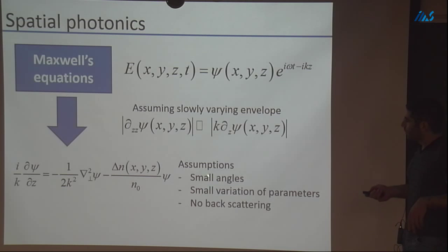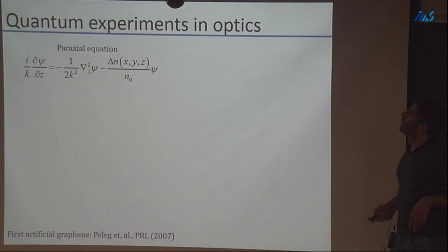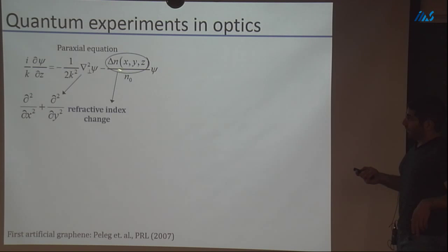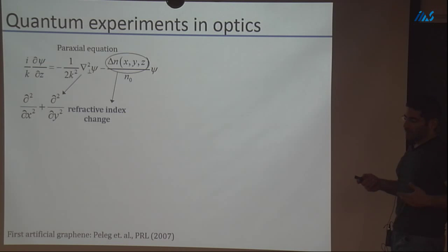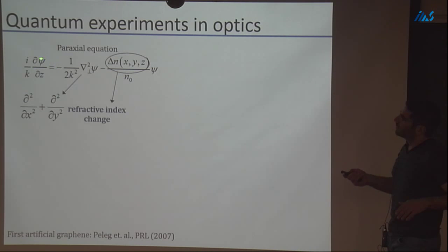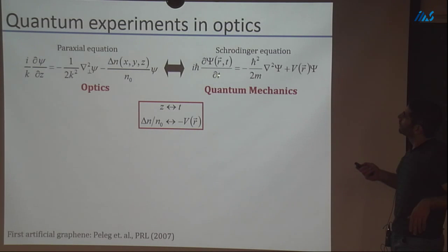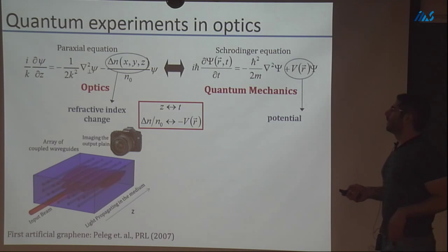The assumption is small angles, small variation of parameters, and no backscattering — we don't consider backscattering under this equation. The paraxial equation looks like the Schrödinger equation: the variation of the index of refraction is our potential with a minus sign, and we get the transverse Laplacian. We can mimic 1D or 2D systems, but not 3D systems because we use Z as our time — time and Z are exchanged, and the potential is replaced by variation of the index of refraction.